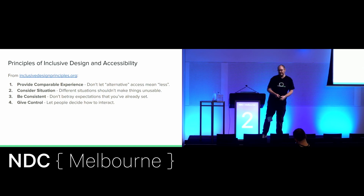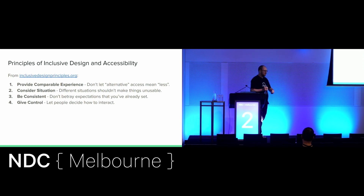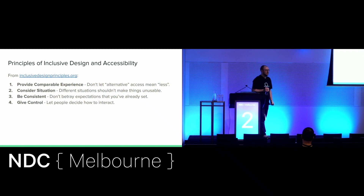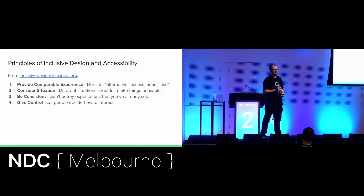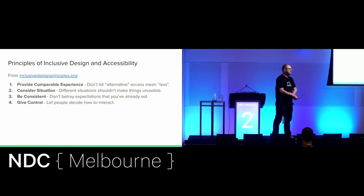Give control - let people decide how to interact. This is important for people with different access tools. You don't say this is the one true way to do this particular action. You let people use the tools they have. If you make an interface where you have to click and use a mouse, that's something you've made less accessible. People who use Vim and NeoVim prefer keyboard shortcuts and if they didn't have to use a mouse ever, they'd be very happy.